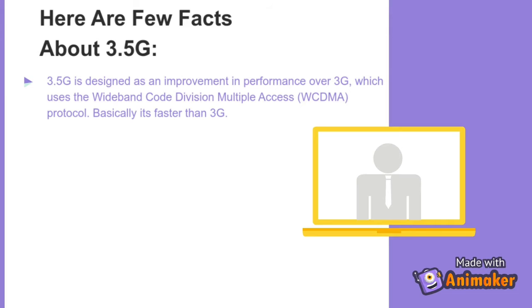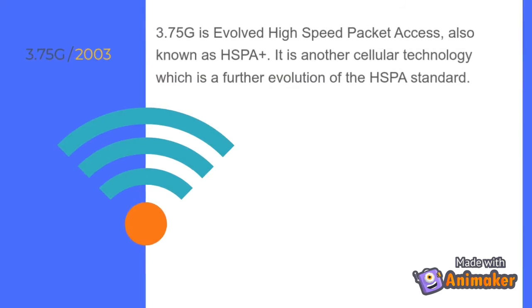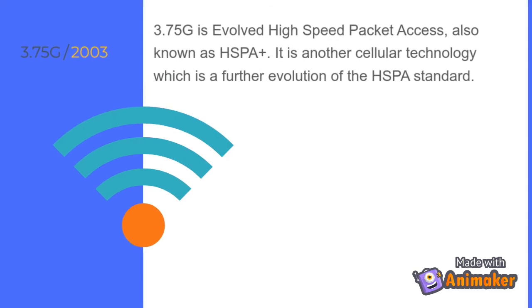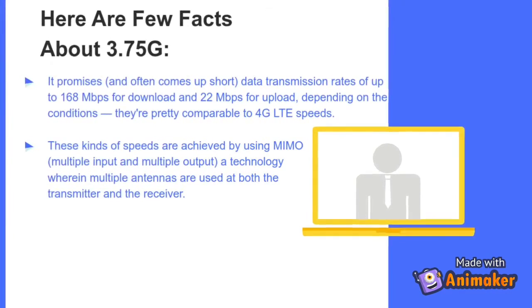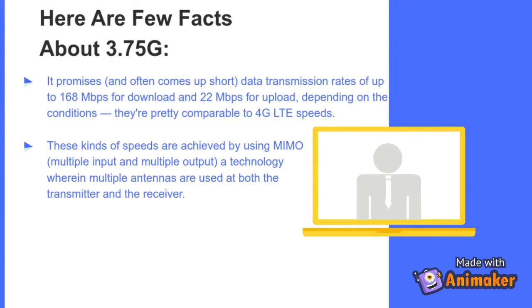3.75G is Evolved High-Speed Packet Access, also known as HSPA+. It is a further evolution of the HSPA standard. It promises data transmission rates of up to 168 Mbps for download and 22 Mbps for upload, which are comparable to 4G LTE speeds. These speeds are achieved by using MIMO (Multiple Input and Multiple Output), a technology wherein multiple antennas are used at both the transmitter and receiver.